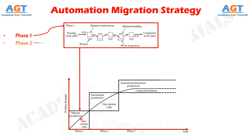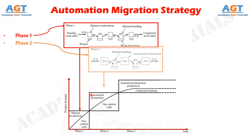Phase 2: Automated production using single station automated cells operating independently. As demand for the product grows and it becomes clear that automation can be justified, the single stations are automated to reduce labor and increase production rate. Work units are still moved between workstations manually.